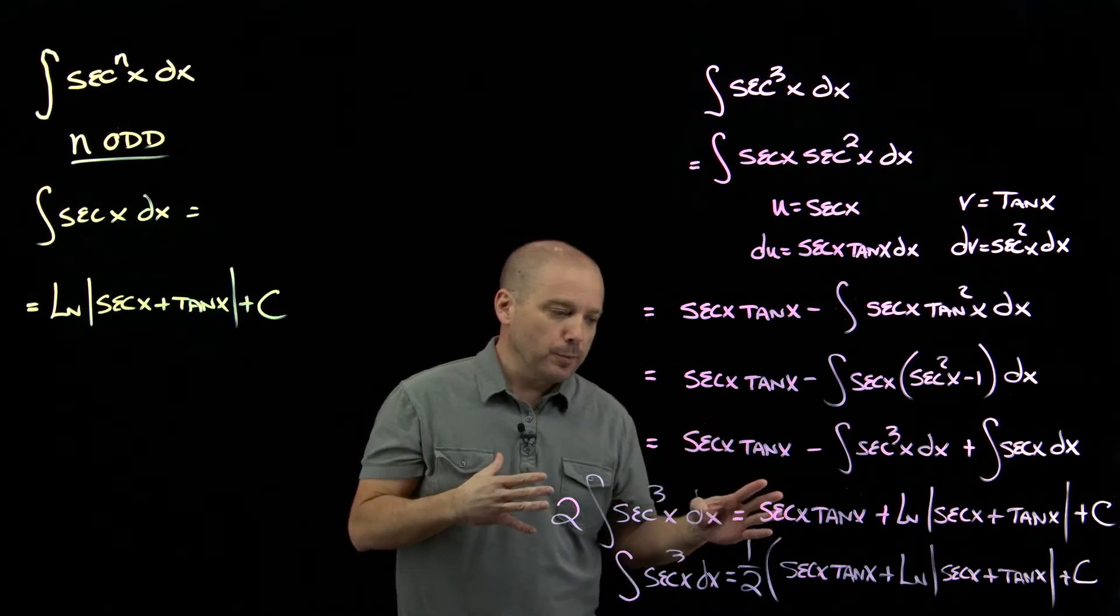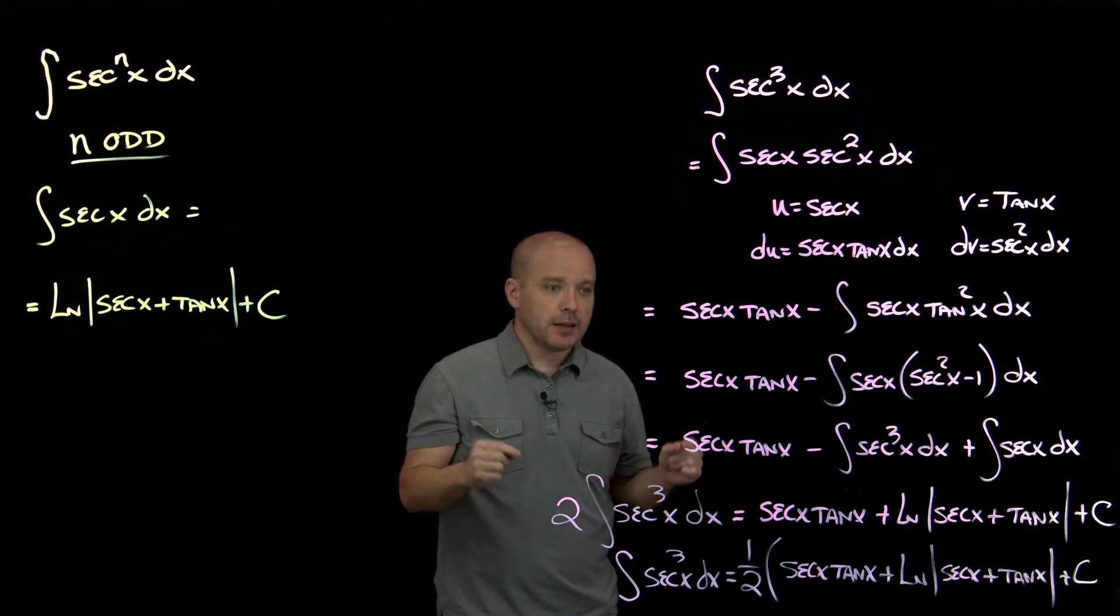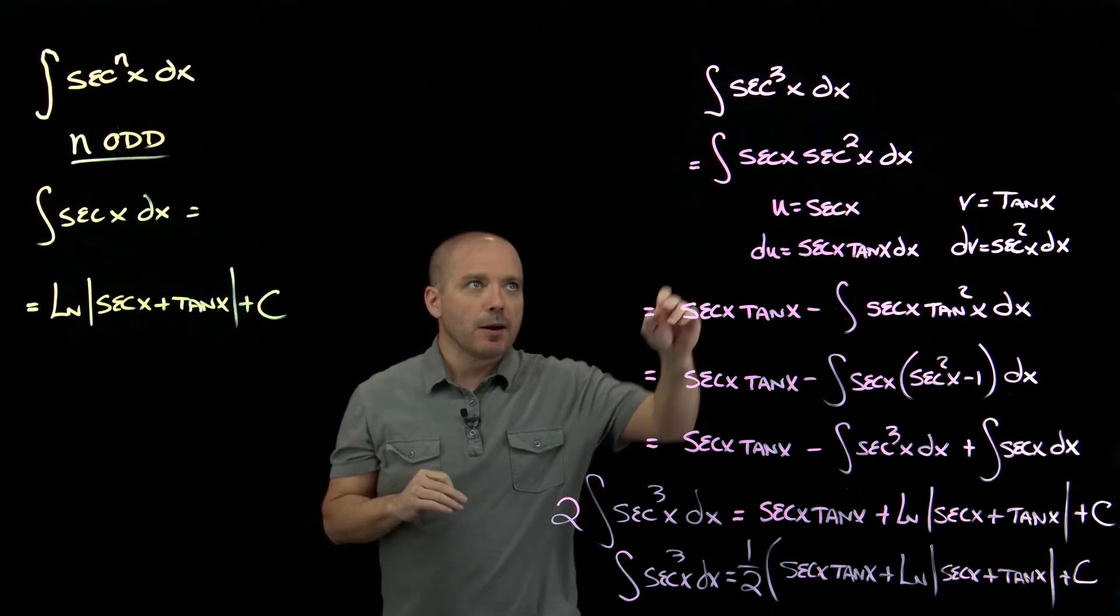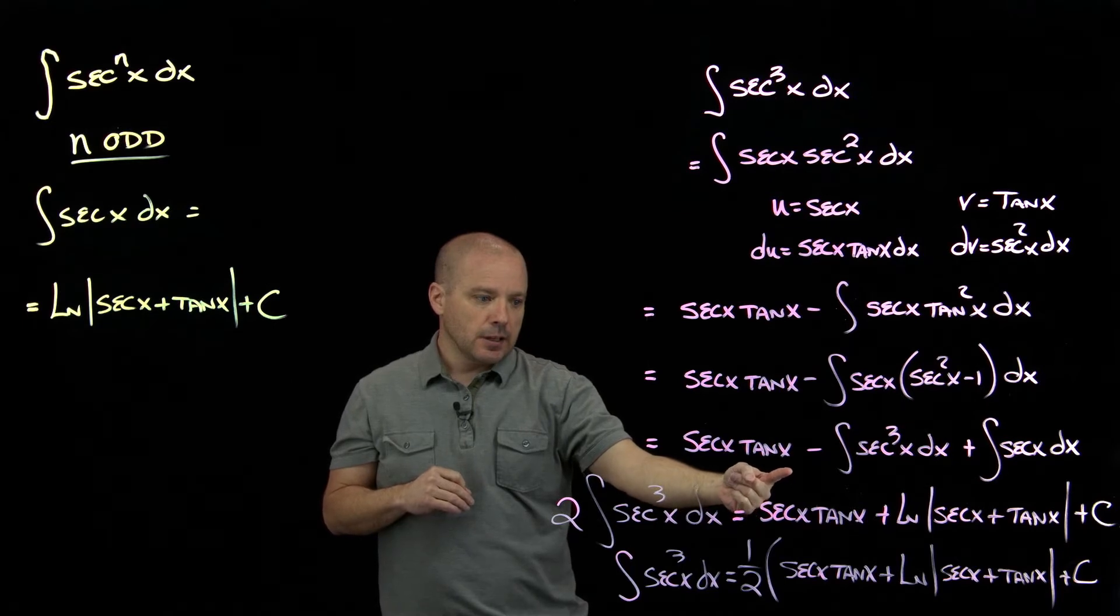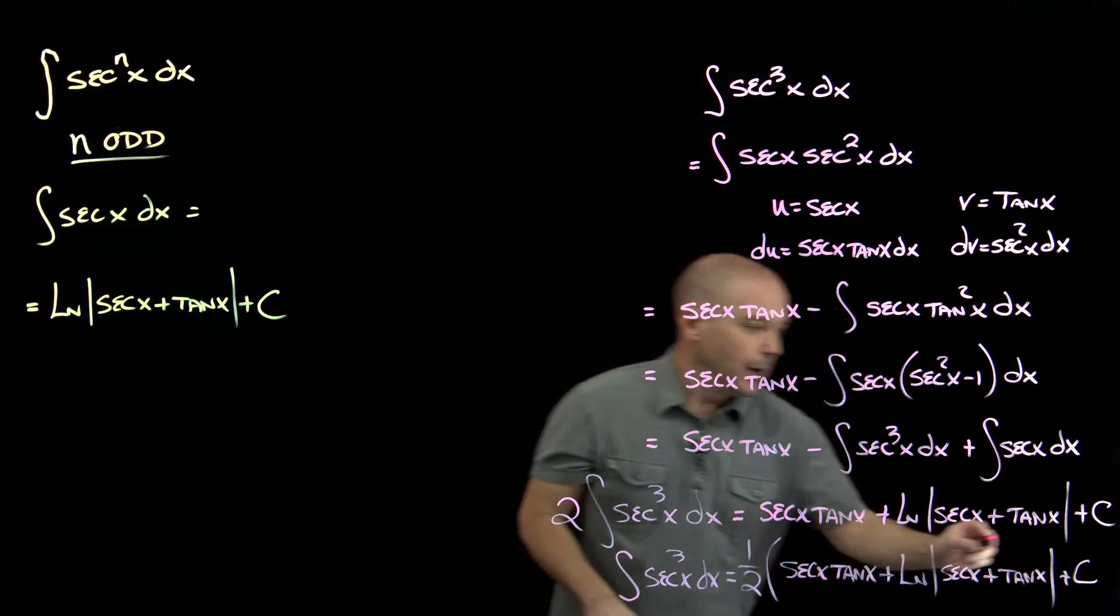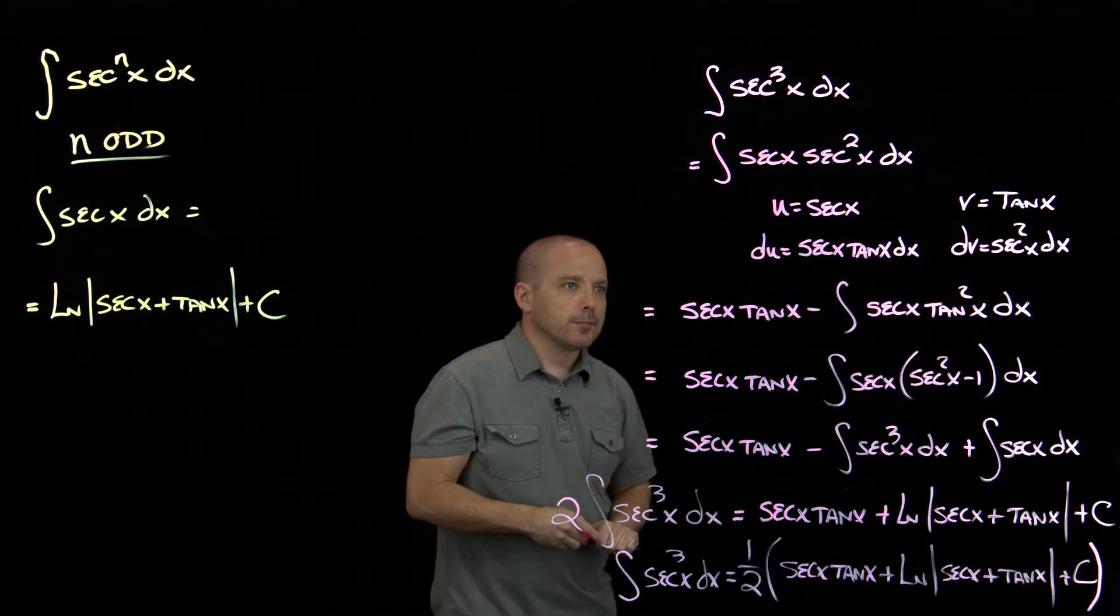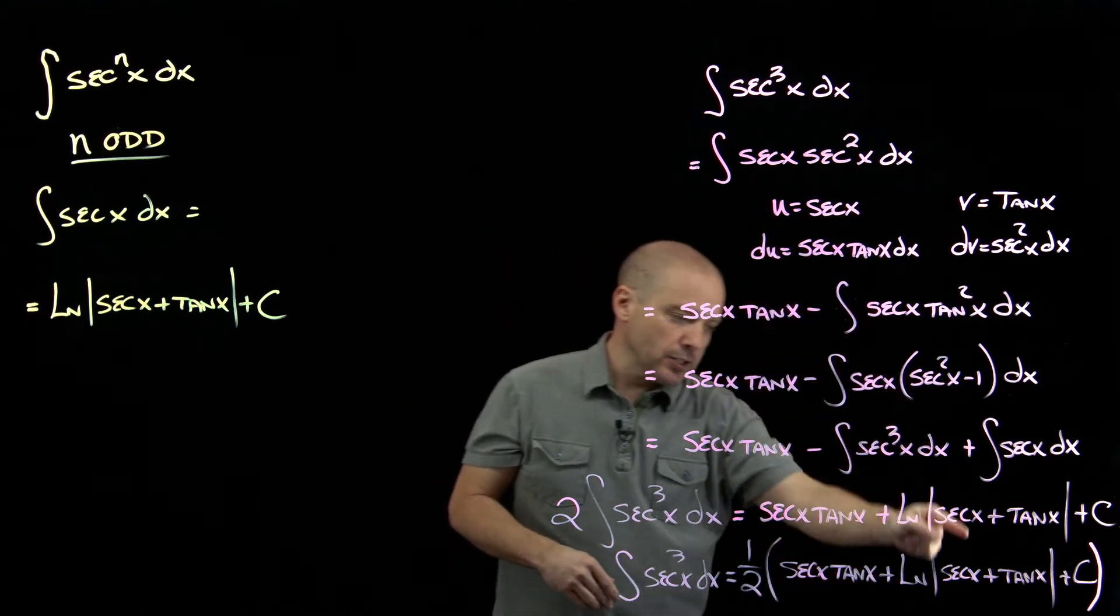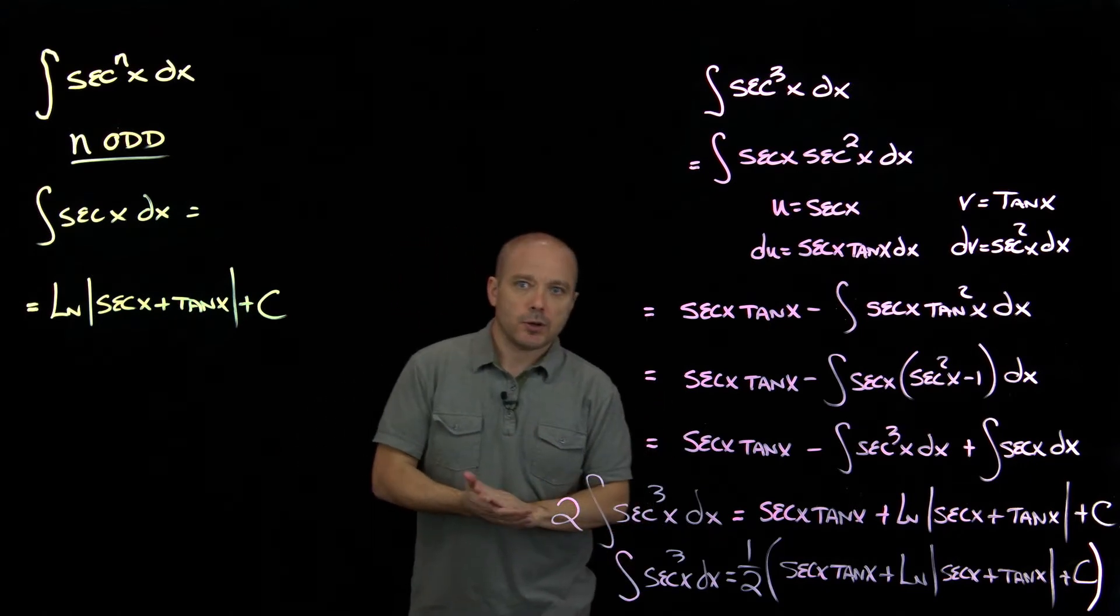So for practical purposes, you wouldn't want to do that by hand over and over again. But mathematically, that's important for us to know, because what it tells us is no matter what that power is, there is an antiderivative. It may take a while to get to it, but there is one. So no matter what odd degree we have, eventually you'll get down to first degree and you'll be able to integrate that.